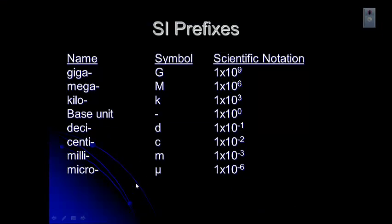And then the next one you'll need to know is nano. And you may have heard of nanoparticles or nanobots. Sometimes you hear about things like that. Nano is obviously really small. And that symbol for that is a lowercase n. Scientific notation is 1 times 10 to the negative 9th.